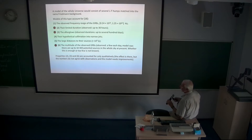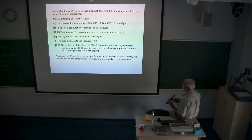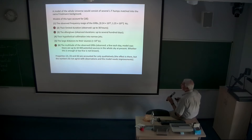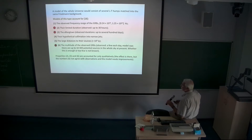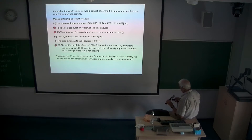For three other properties — marked with red dots — the model accounts only qualitatively: the effect is there but the numbers don't agree with observations and the model needs improvement. These include the limited duration of gamma ray bursts (observed durations up to 30 hours), the afterglows (observed durations up to several hundred days, but these models predict much longer), and possibly the multitude of observed gamma ray bursts (observed a few times a day). This model says there are up to 10,300 potential sources in the whole sky at present.